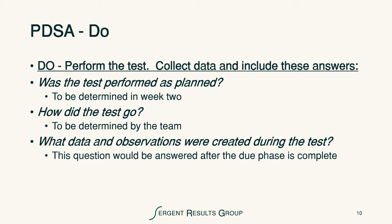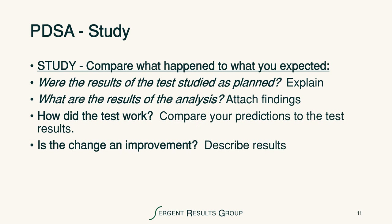The Plan-Do-Study-Act cycle is where we perform the test, collect the data, and include the answers to these questions: Was the test performed as planned? How did the test go? What data and observations were created during the test? In the study phase, we'll compare what happened to what we expected. We'll answer these simple questions: Were the results studied as planned? What are the results of the analysis? How did the test work? And then, is the change an improvement?